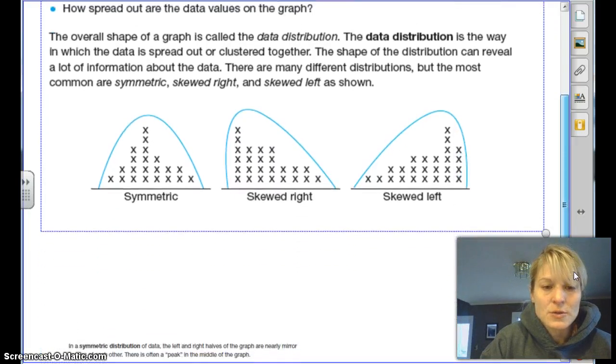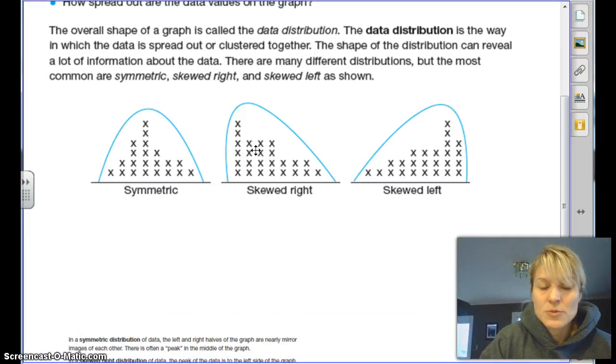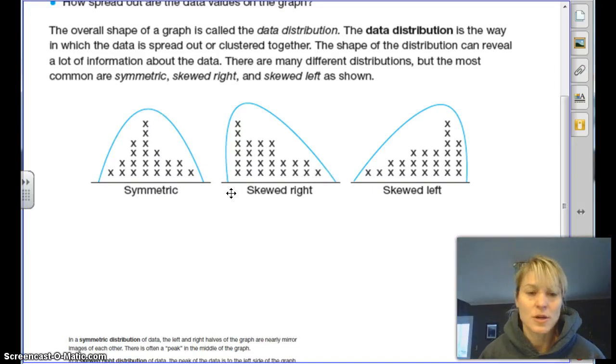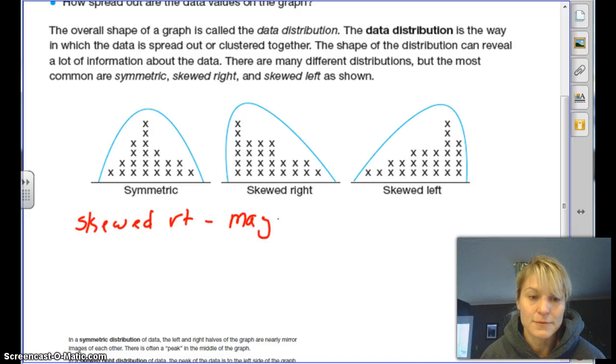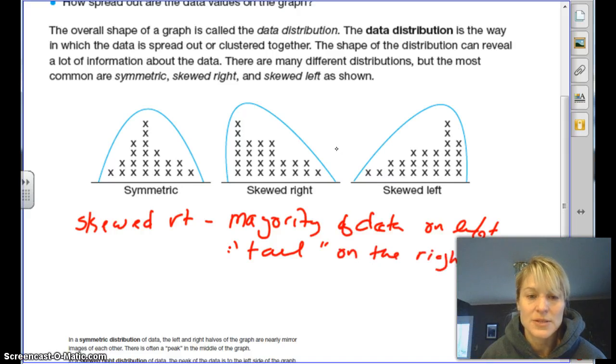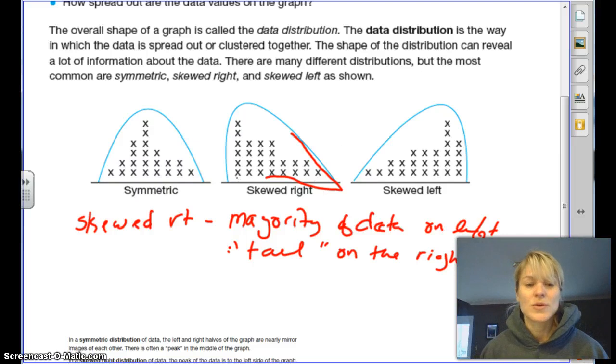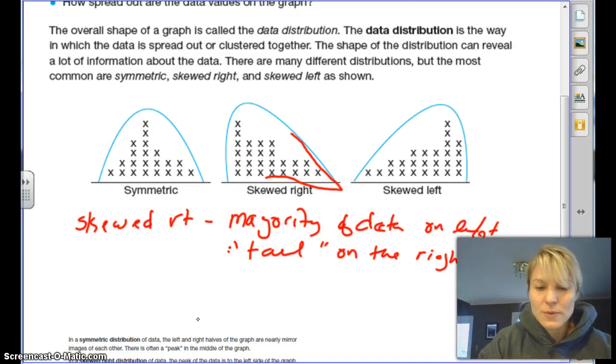So when you look at a skewed right, the majority of your data should be on the left. And they call this the tail. There's just a few things on the right pulling it that way. So when you talk about skewed right, the majority of the data should be on the left, and there should be what's called a tail on the right. So it's kind of like this area is pulling this. So it's kind of like a tail of a cat or a dog or a dinosaur, whatever you want to call. So we say it's skewed right. So everything's here and this little bit of data is pulling it over to the right. So we call that a skewed right data distribution.